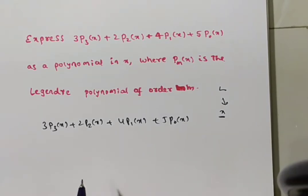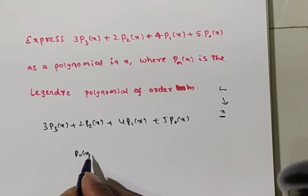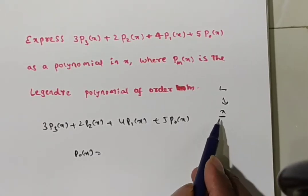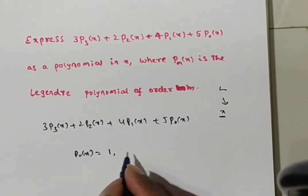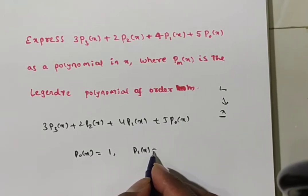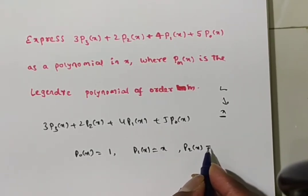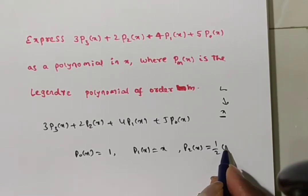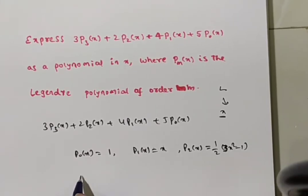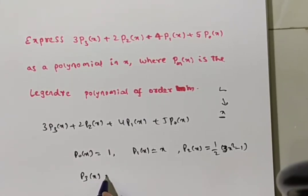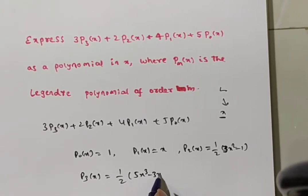Now from the Legendre polynomials, P₀(x) is 1, P₁(x) equals x, and P₂(x) value is ½(3x² - 1), and P₃(x) equals ½(5x³ - 3x).